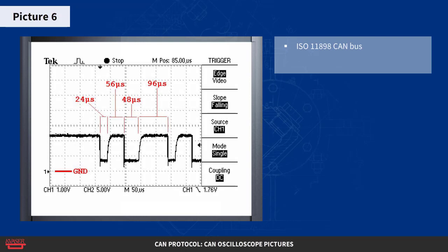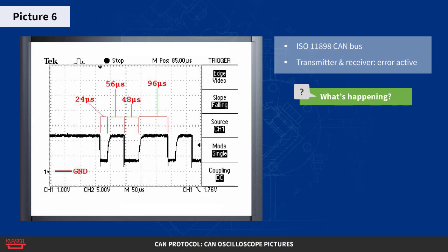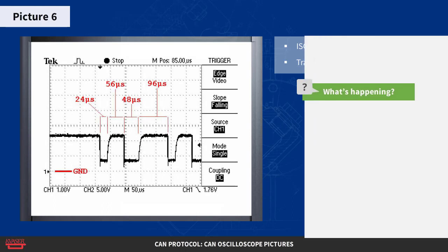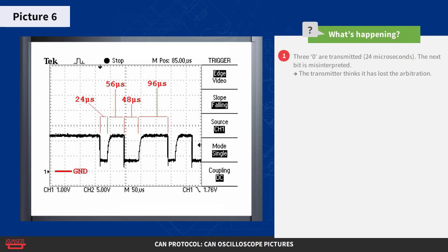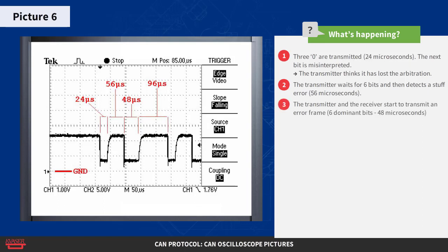Here's the same setup, but this time both the transmitter and the receiver are error active. So what's happening? Just as in the figure above, three zeros are transmitted, which takes 24 microseconds, and the next bit is misinterpreted so the transmitter thinks it has lost the arbitration. The transmitter waits for six bits and then detects a stuff error — the misinterpreted bit and the six bits take 56 microseconds. The transmitter and receiver now start to transmit an error frame: six dominant bits, or 48 microseconds.